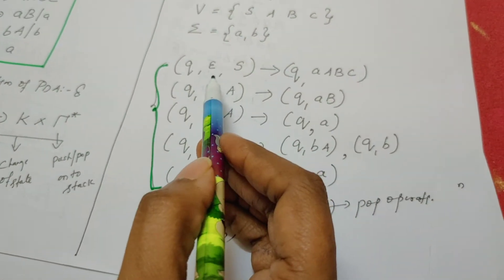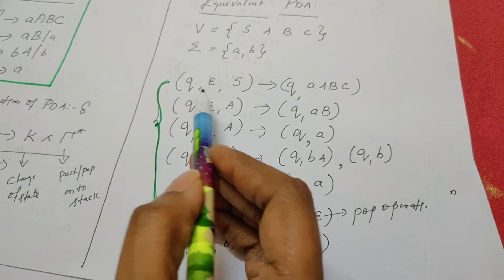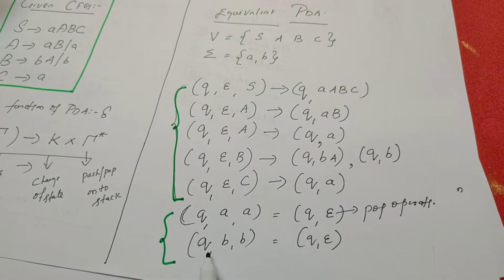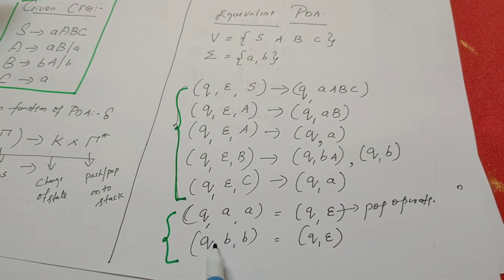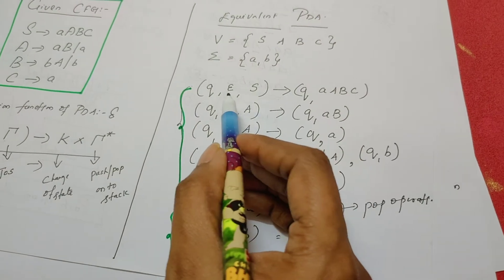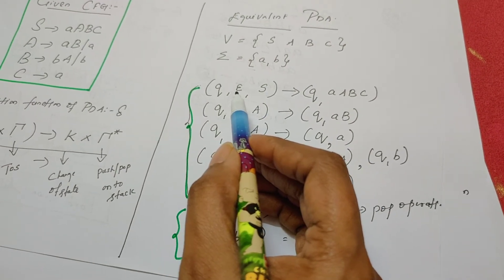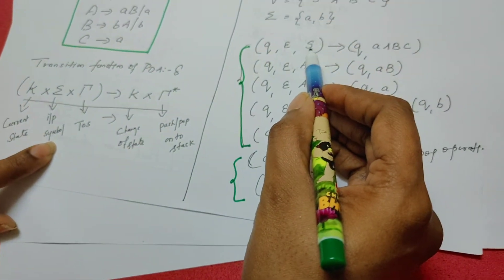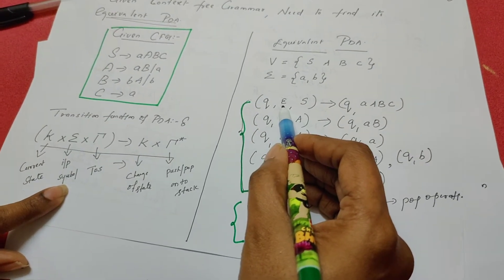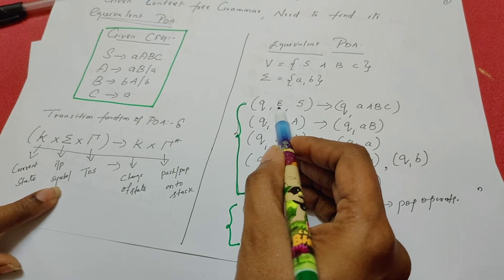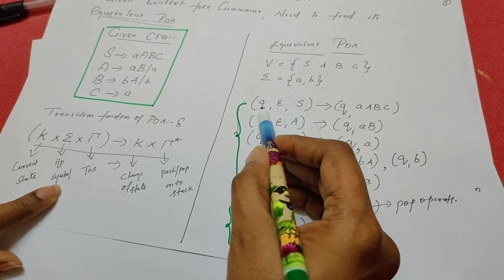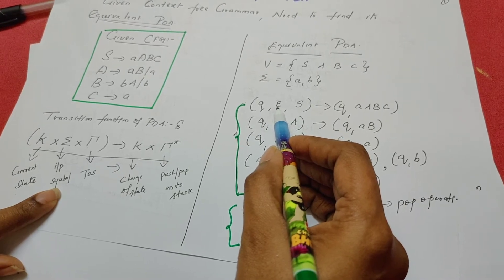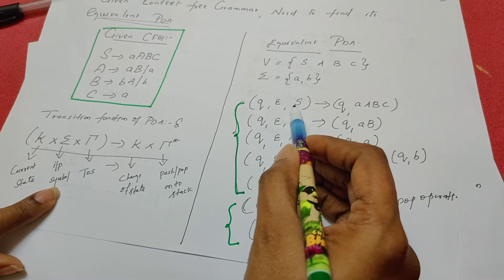Now let us see the procedure to write the transition rule. Throughout the set of transition rules, we use only one state, which is Q. This indicates the current input symbol in the input tape. Whenever there is a variable at the top of the stack, we mention the input symbol from the input tape as epsilon — it means the PDA does not read anything from the input tape when the top of the stack is a variable.